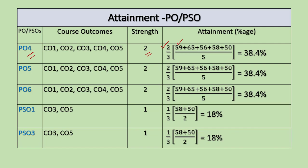The attainment level of CO1 is 59%, CO2 is 65%, CO3 is 56%, CO4 is 58%, and CO5 is 50%, taken from the previous table. These are divided by 5 because there are five COs, giving the average attainment level. This average is then multiplied by the scale factor of 2/3, and the attainment level for PO4 comes out to be 38.4%.